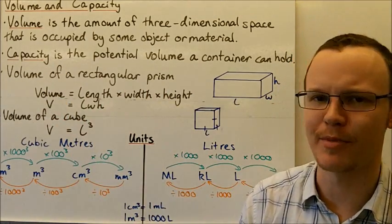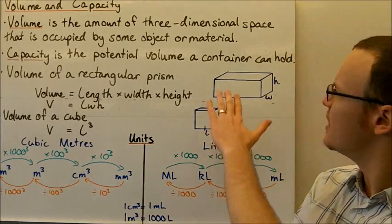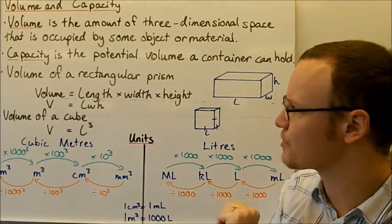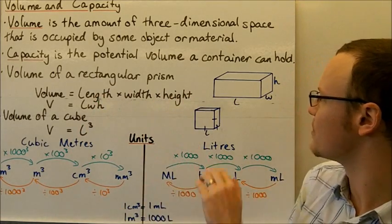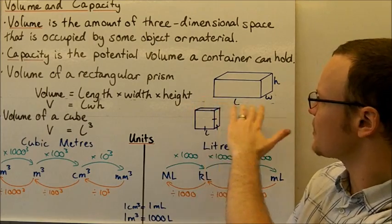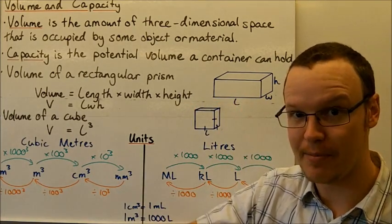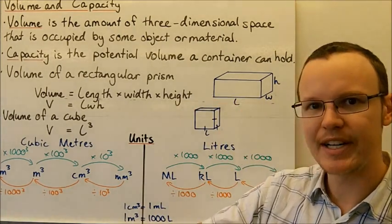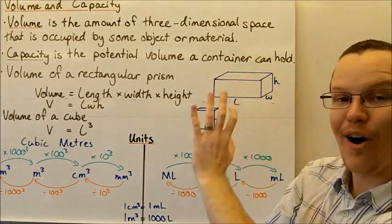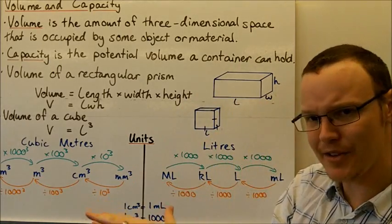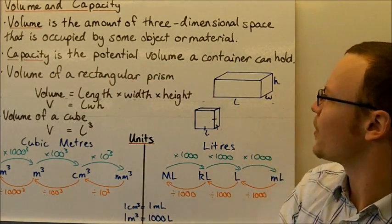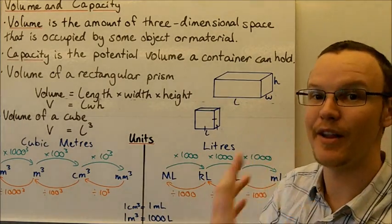To find the volume of a basic rectangular prism that has a length, a width, and a height, the volume is found by multiplying all three together: length times width times height. The reason for that is that length times width gives the area of the base, and then if we build it up into the third dimension, we're multiplying by the height — building it up by that third dimension.